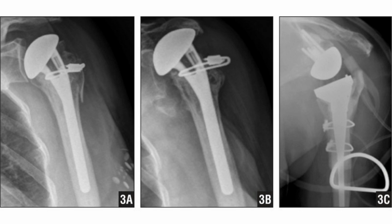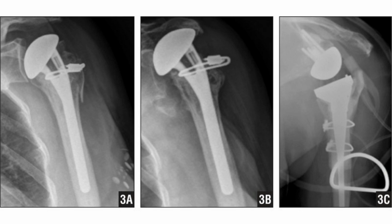An adult human's skeletal system has 206 bones including joints, cartilages, and strap-like ligaments that hold bones together. Out of these bones, Humerus and Femur are two large bones that belong to the appendicular skeleton.